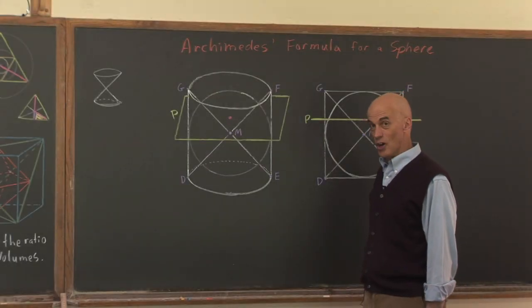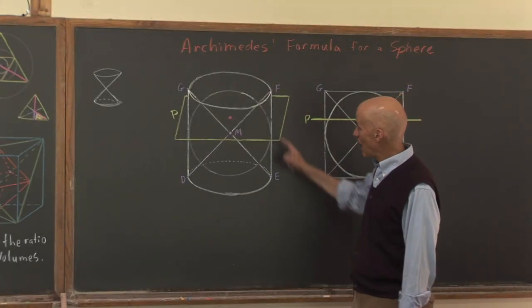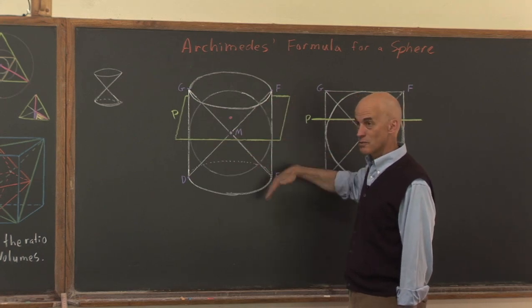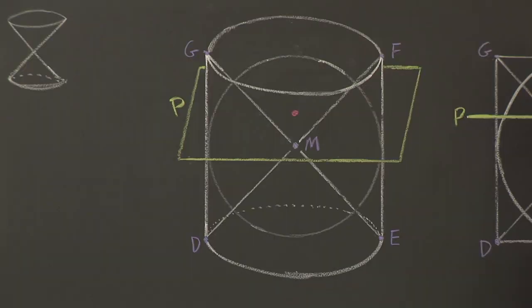What Archimedes didn't know — and what he's trying to figure out — is what is the volume of the sphere in terms of the cylinder. Maybe the volume of the sphere would be half of the cylinder it fits into, or maybe three quarters or some other fraction. What he already knew, and what many people knew before him, was that the volume of a cone is one third of the cylinder it fits into, and he's going to use that information.